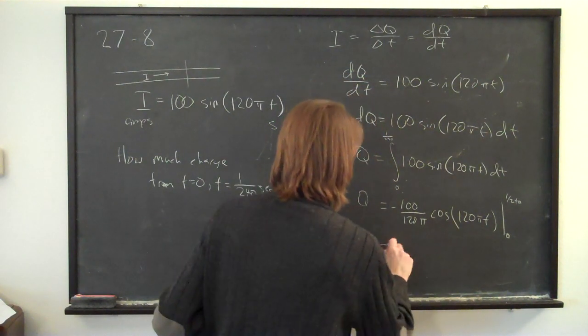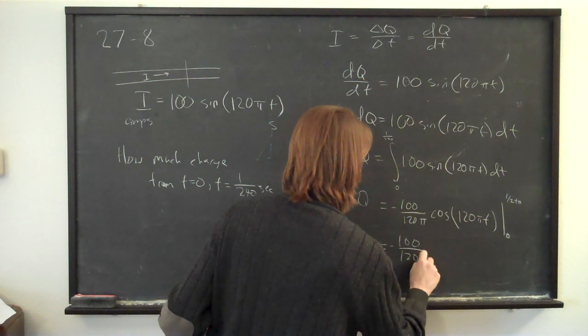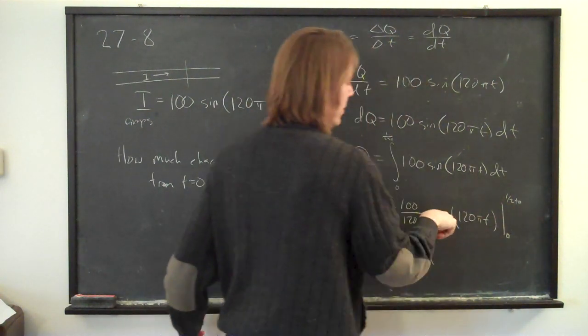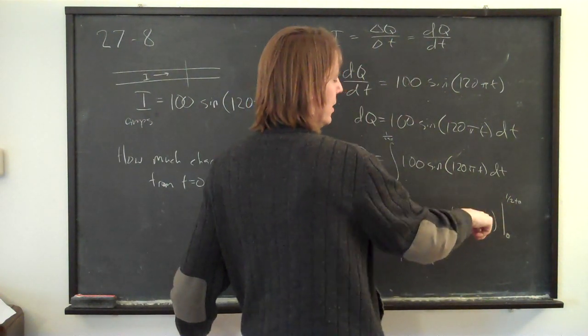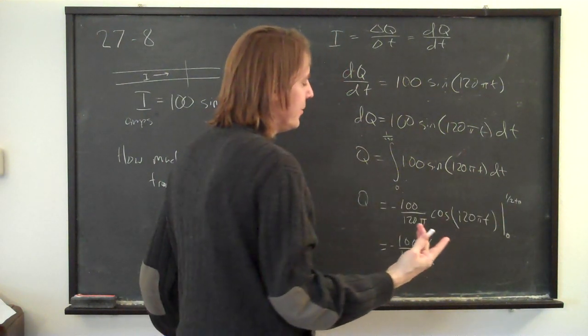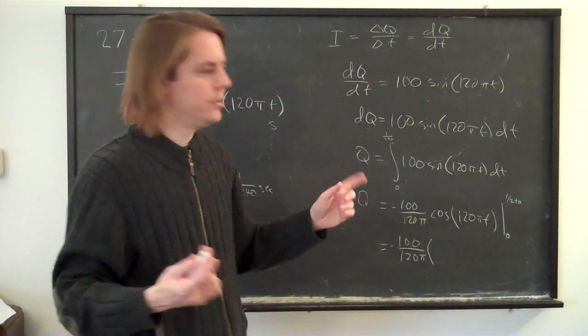That's going to be equal to minus one hundred over one twenty pi. And then, this cosine, the cosine of this part is t is one over two hundred and forty. That's one twenty over two forty. So that's a half. So that one is the cosine of pi over two, which is zero.